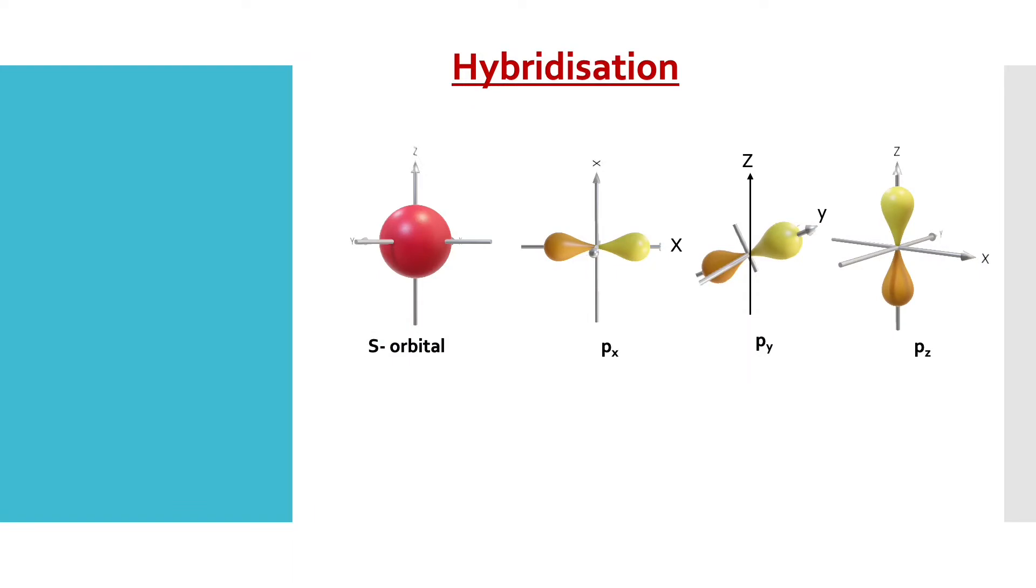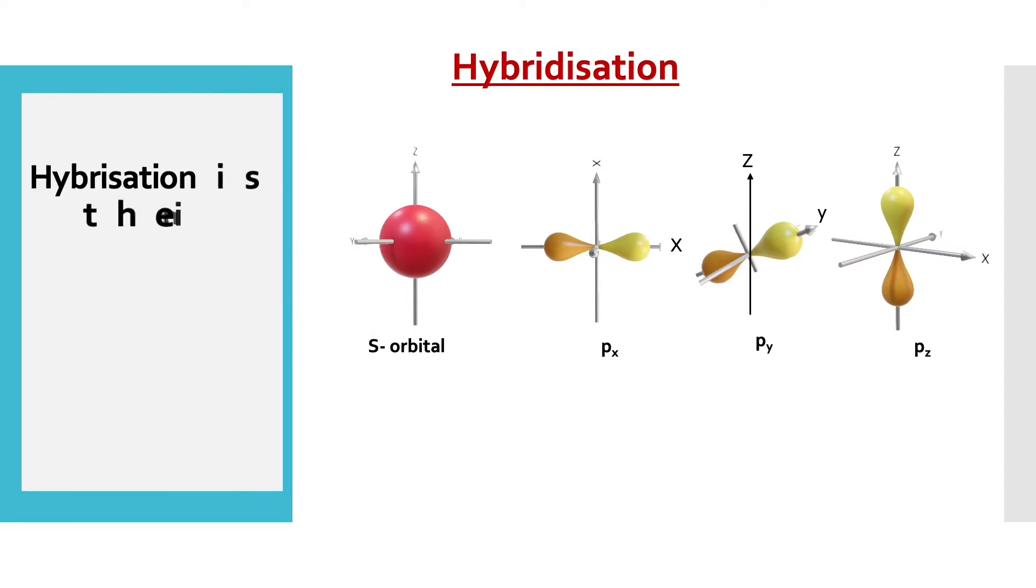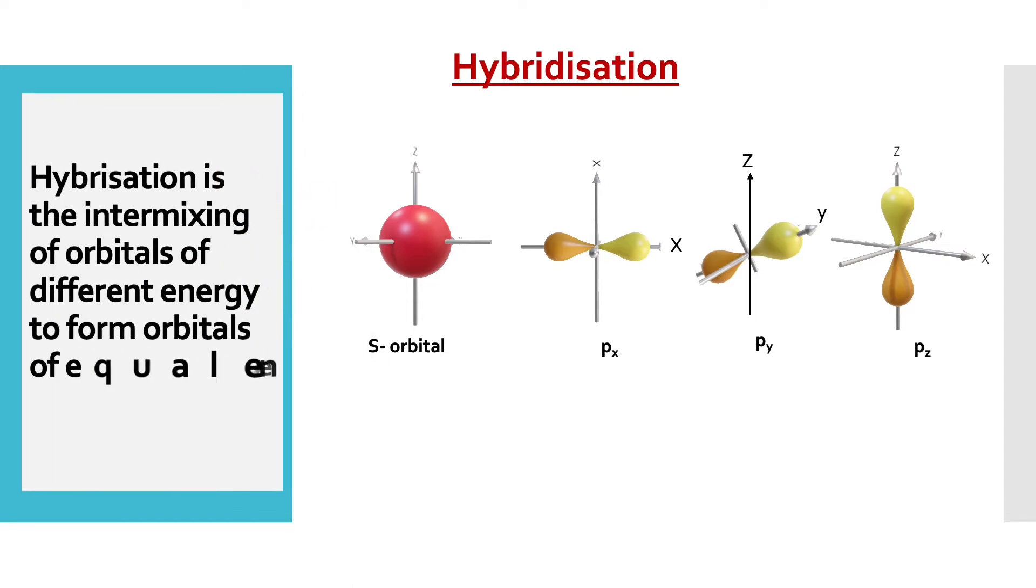First let us see what is hybridization. Hybridization is a phenomenon in which orbitals of different energy intermix together and form orbitals of equivalent energy and same shape.